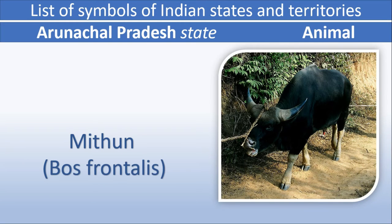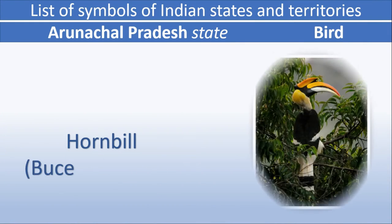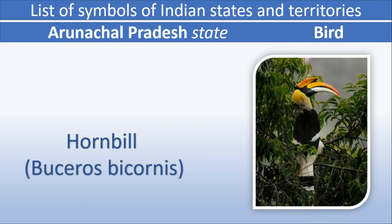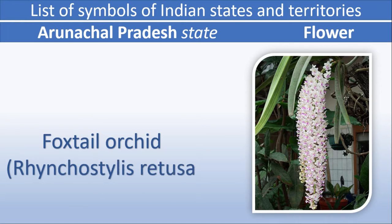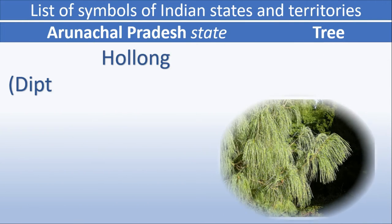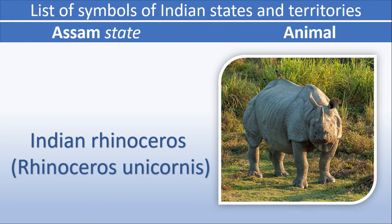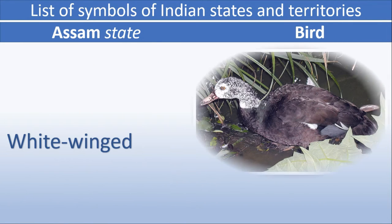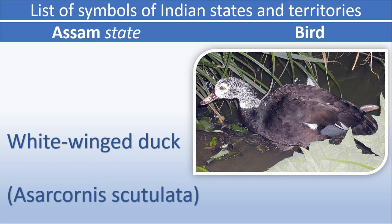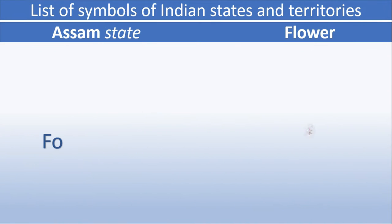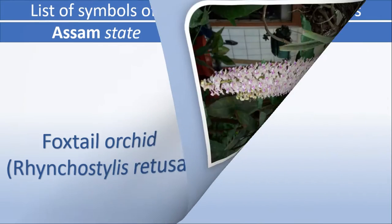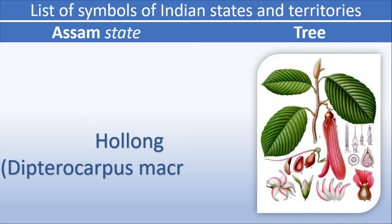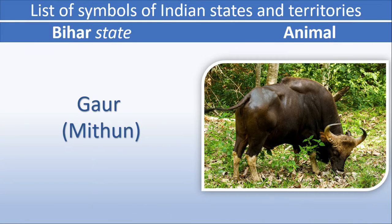Arunachal Pradesh animal: Mithun. Arunachal Pradesh state bird: Hornbill. Arunachal Pradesh flower: Foxtail Orchid. Arunachal Pradesh tree: Hollum. Assam animal: Indian Rhinoceros. Assam bird: White-winged Duck. Assam flower: Foxtail Orchid. Assam tree: Hollum.